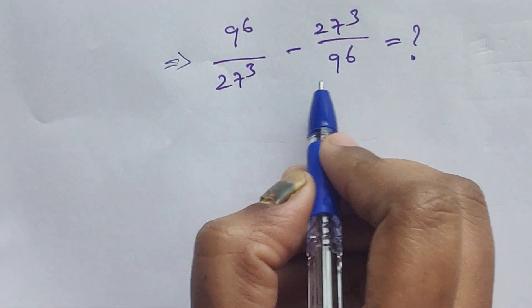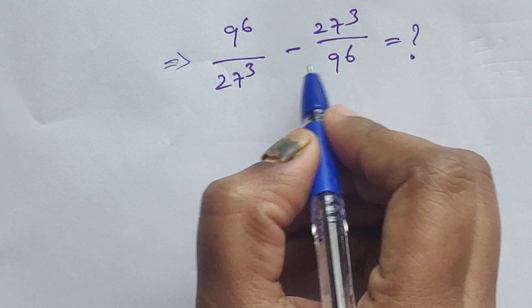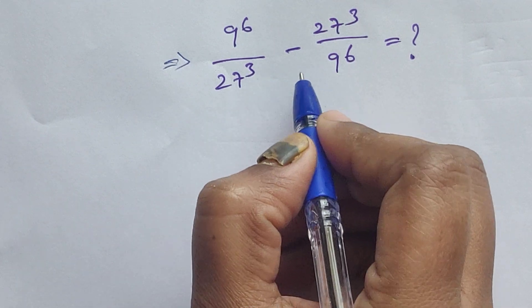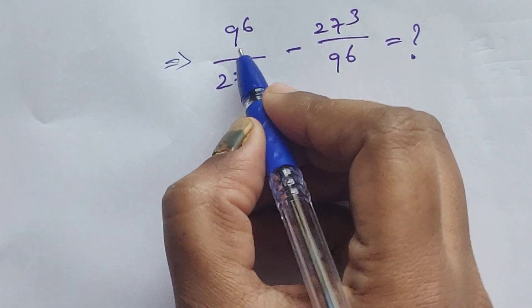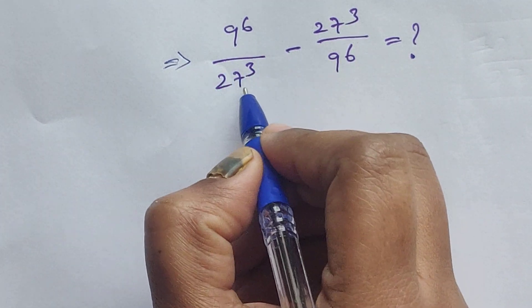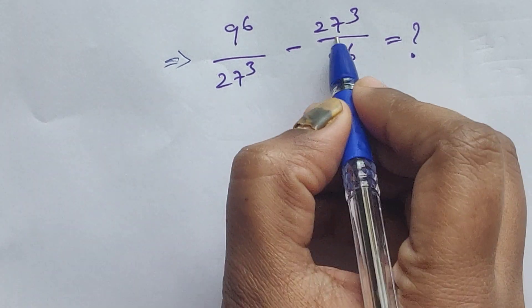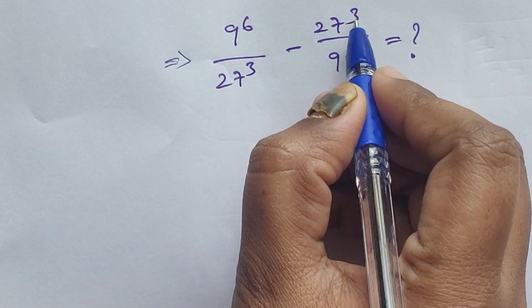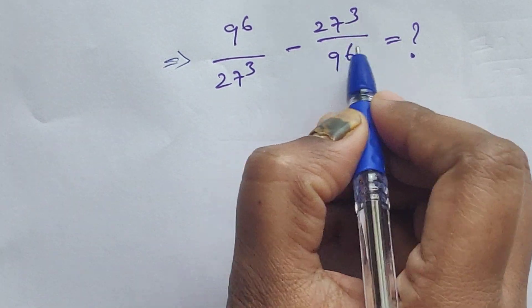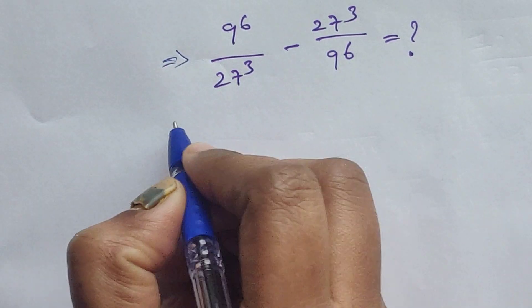Hello everyone. Here we have one problem — how to solve this type of problem: 9 to the power of 6 divided by 27 to the power of 3, minus 27 to the power of 3 divided by 9 to the power of 6.